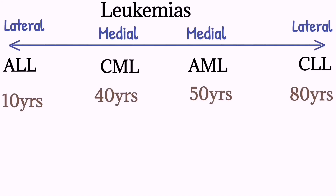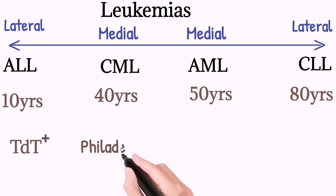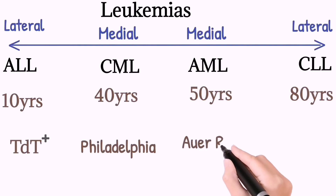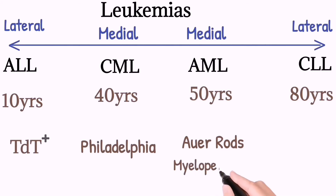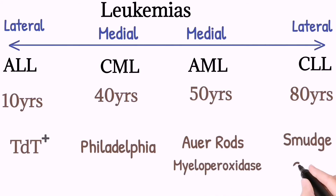The second trick is diagnostic lab findings. In ALL, TdT is positive. In CML, the Philadelphia chromosome — which is a translocation between chromosome 9 and 22 — is present. In AML, Auer rods and myeloperoxidase are present. In CLL, there are smudge cells.